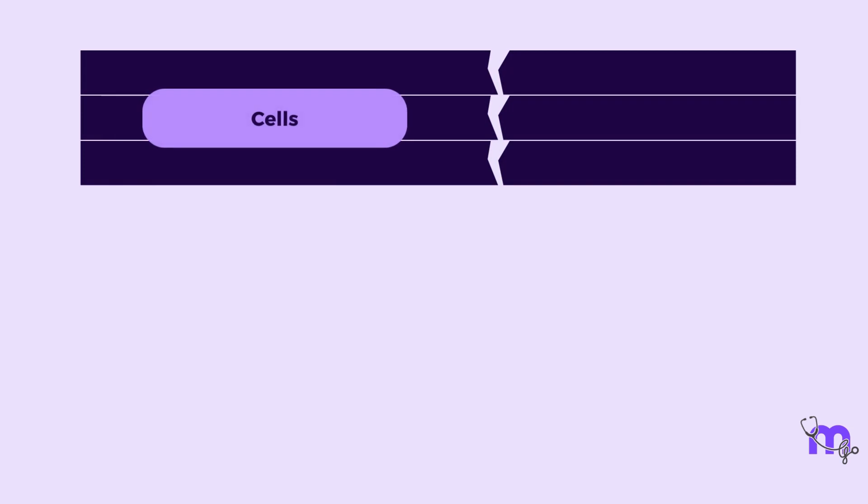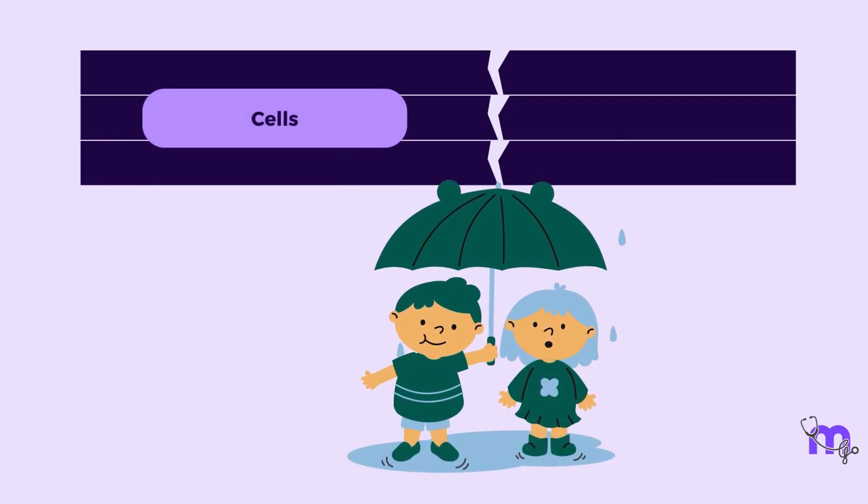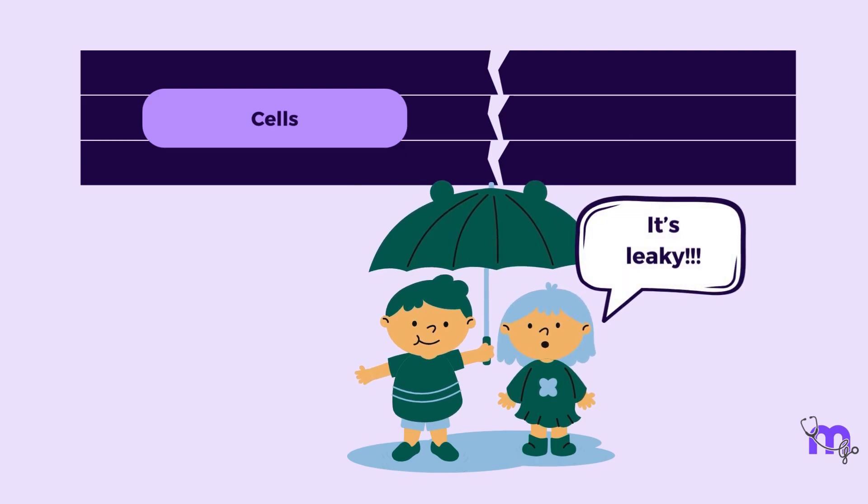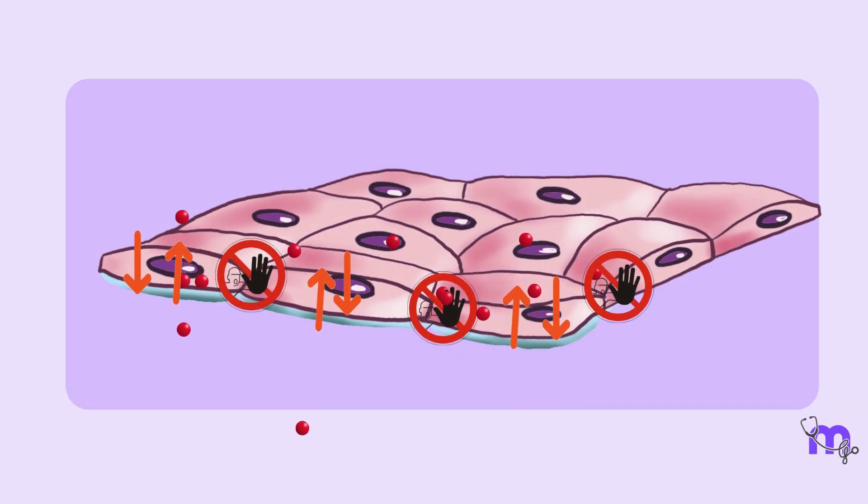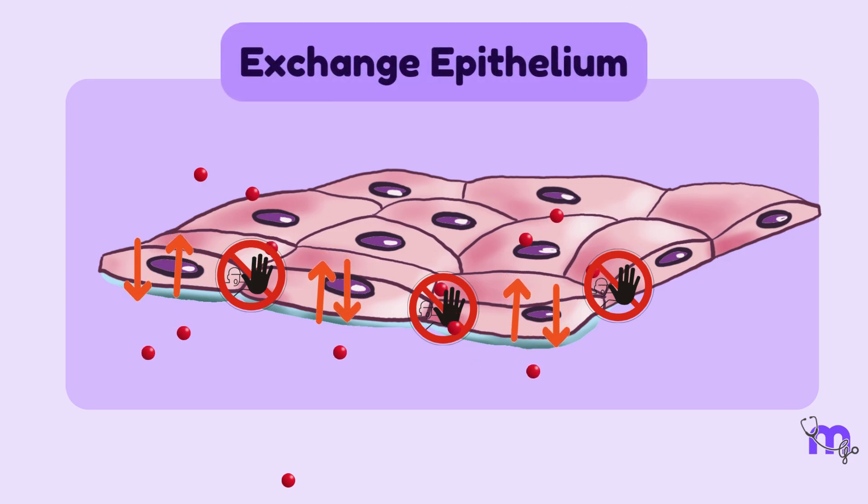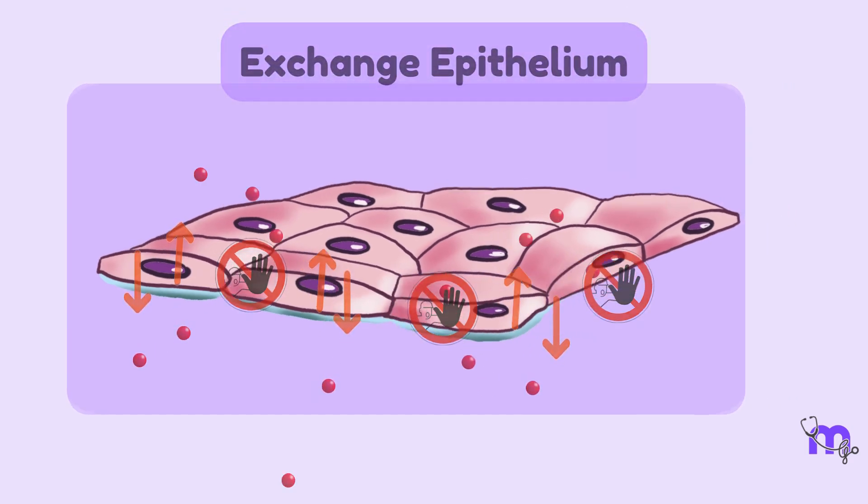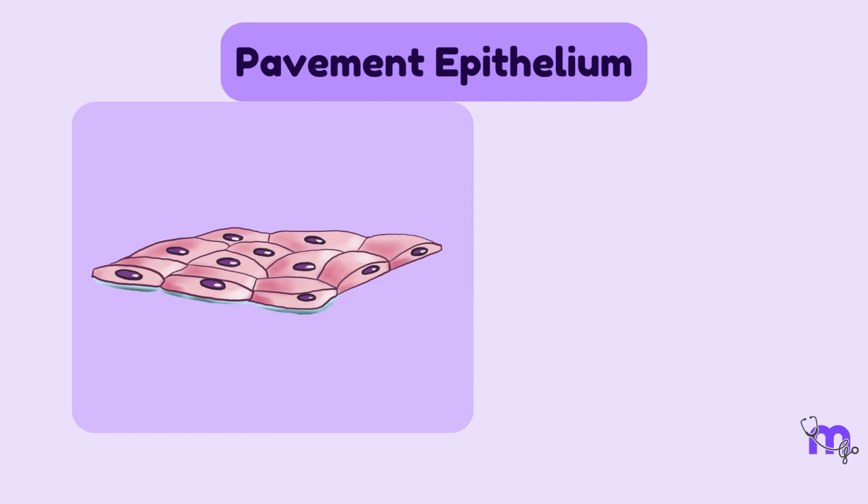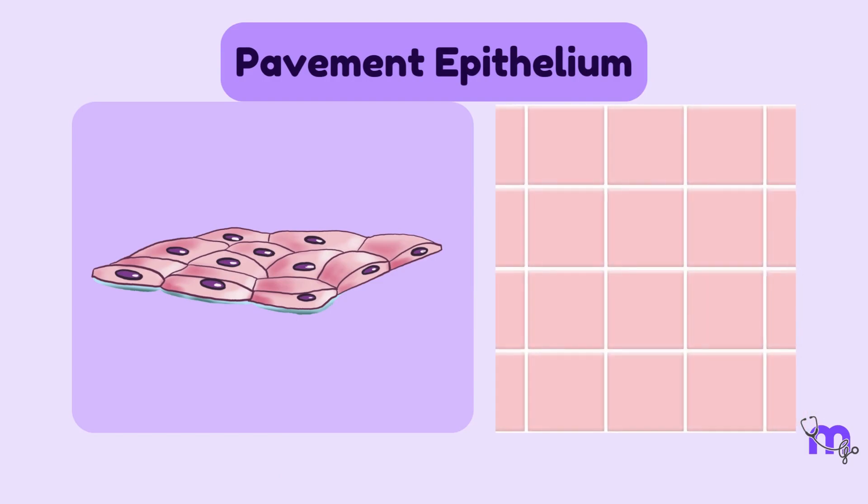If gaps are present between the cells, it can result in substances escaping between them and is called leaky epithelium. The simple squamous epithelium is also called exchange epithelium because of its function and pavement epithelium because it resembles the flat tiles of a pavement.